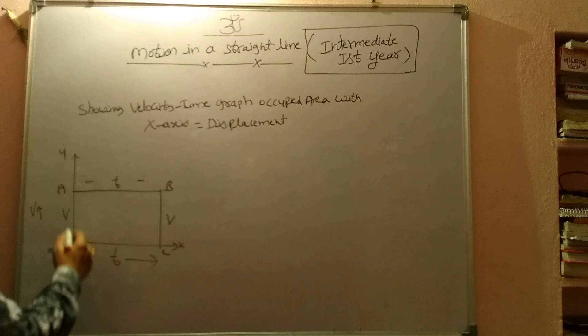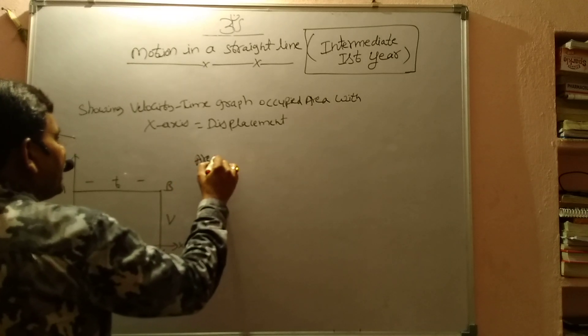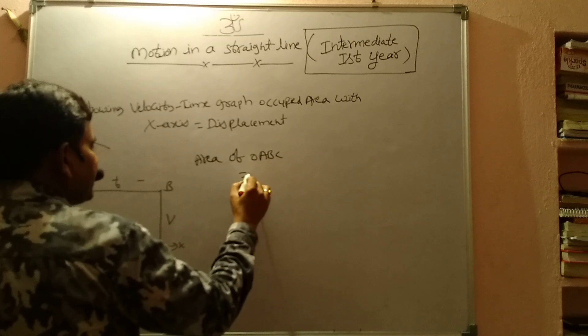Now here what is created? One rectangle is created. So what is the area of the rectangle? L into B. Area of OaBc - it is one rectangle.